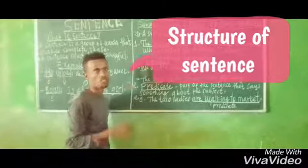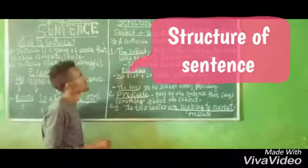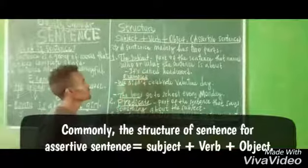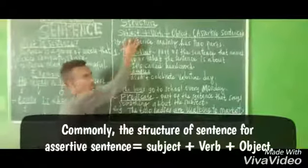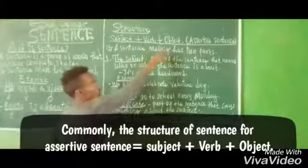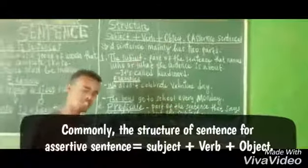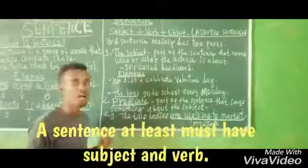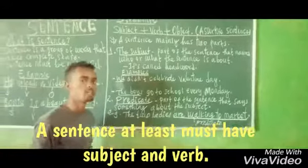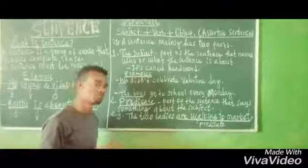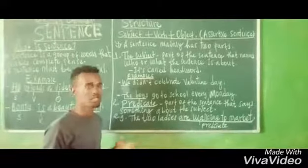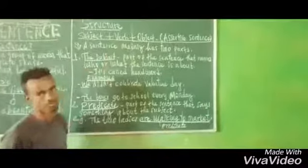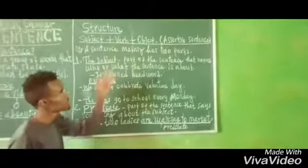What is the structure of a sentence? Commonly, the structure of a declarative sentence is subject plus verb plus object. A sentence at least must have a subject and verb. If a sentence doesn't have a subject or verb, we cannot call it a sentence. Sometimes the object is optional.